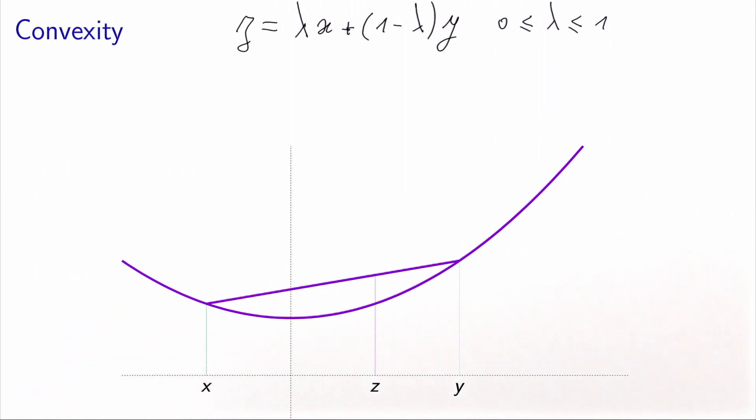You can see that if the value of lambda is equal to 0, z would be equal to y, and if the value of lambda is equal to 1, z will be equal to x. And for any value of lambda strictly between 0 and 1, z will be strictly between x and y. The definition of convexity says that this point must be above this point.